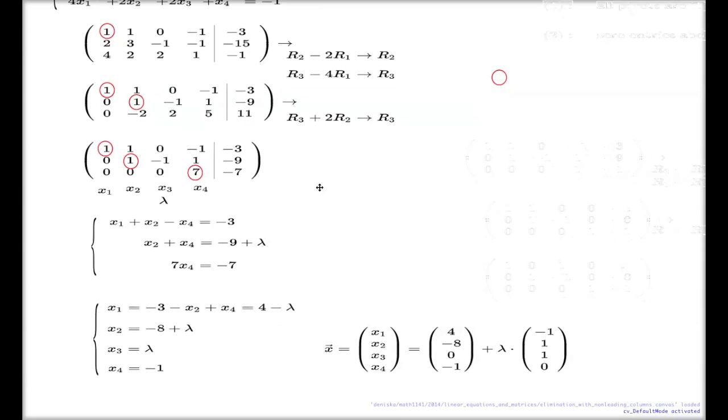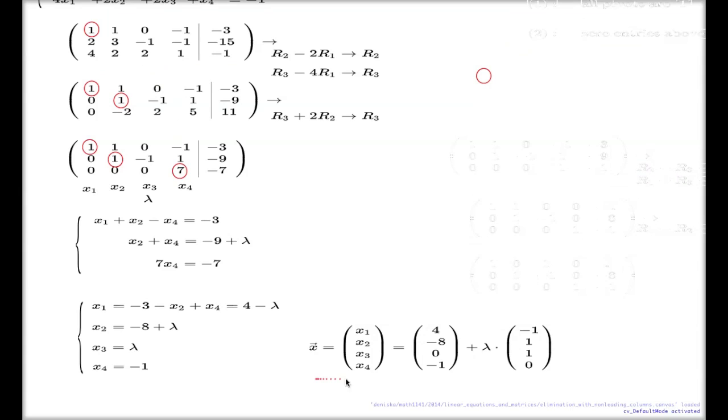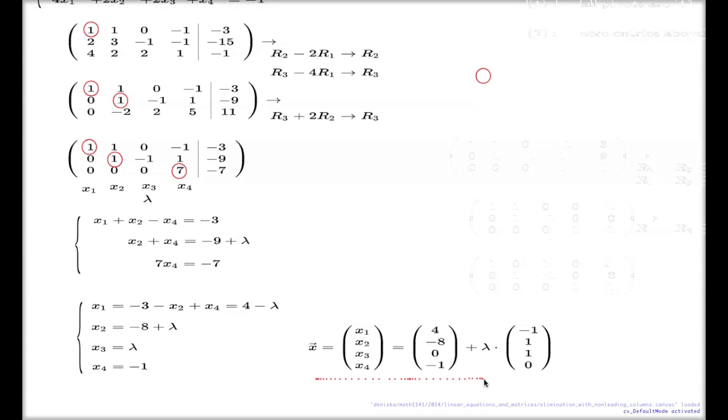The result is this. The answer to the question was this line, the line in the vector form like this. The reason I brought this up again is just because I want to introduce one extra concept in relation to the row echelon forms. And this example is just very good to introduce that.